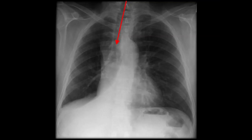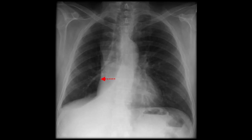The airway is deviated towards the side of the abnormality. The edge of the right hemidiaphragm is completely obscured. The right heart border is further from the midline than you would expect. The lung fields are asymmetrical, with the right being smaller than the left, and there is an area of high opacity in the inferior right lung with absent lung markings.